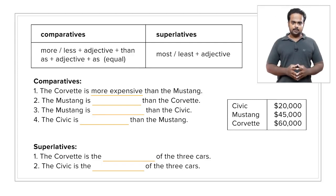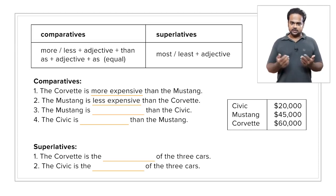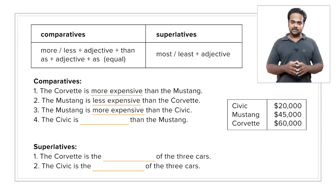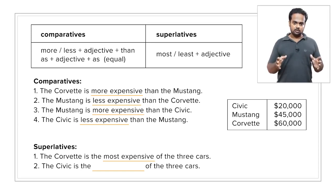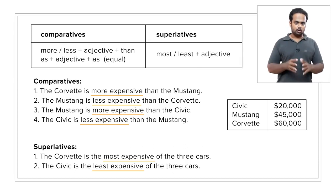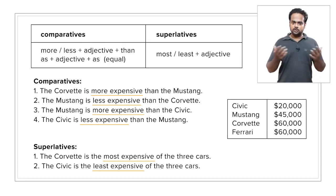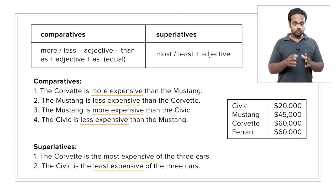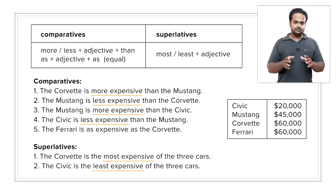All right, let's look at the answers. The Corvette is more expensive than the Mustang, so the Mustang is less expensive than the Corvette. But the Mustang is more expensive than the Honda Civic, so the Civic is less expensive than the Mustang. The Corvette is the most expensive of the three cars, and the Civic is the least expensive. And if the Ferrari is also $60,000, we can say the Ferrari is as expensive as the Corvette.